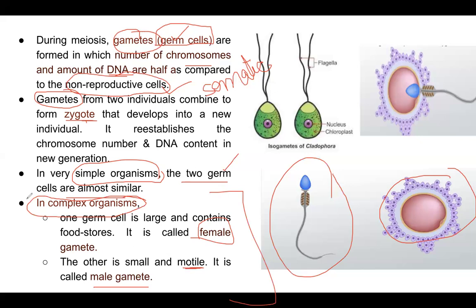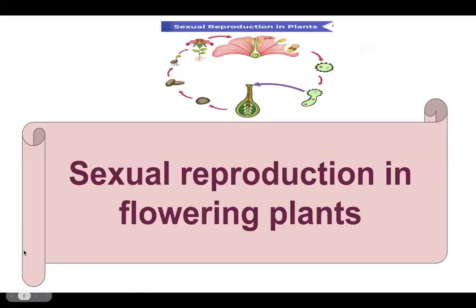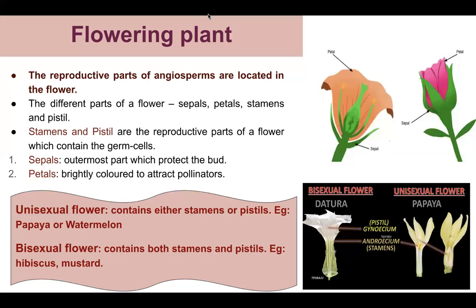Now let's talk about flowers and plants. First, let's talk about the flower structure. The outermost layer is called the sepal — it is green in color. When the flower is small and closed, it is covered by the sepal. The colorful part is called the petal. So two things to remember: sepals are the green parts, and the colored parts are the petals.